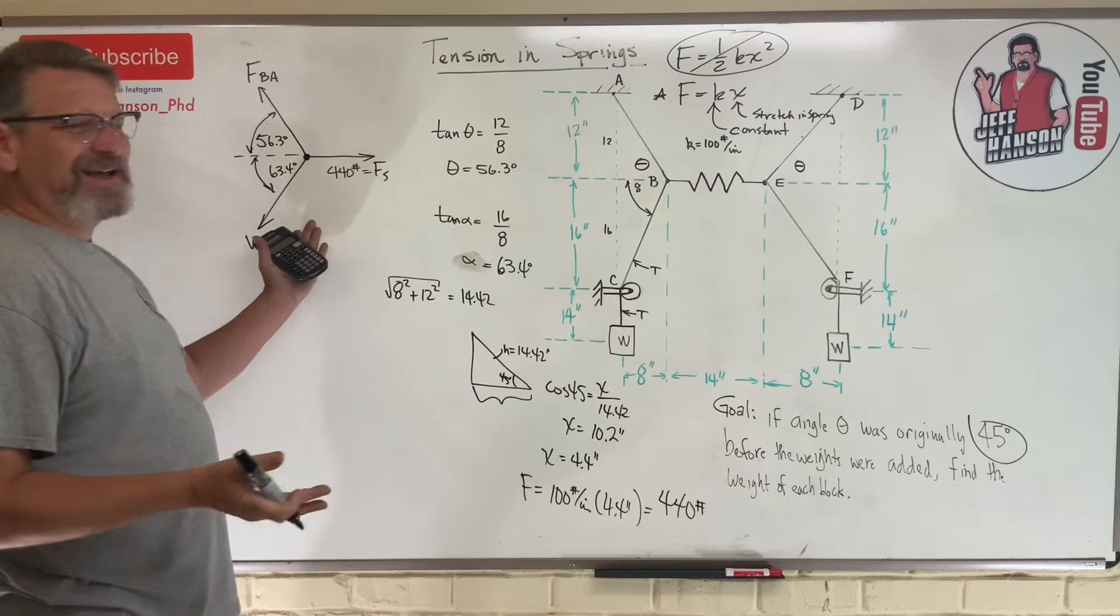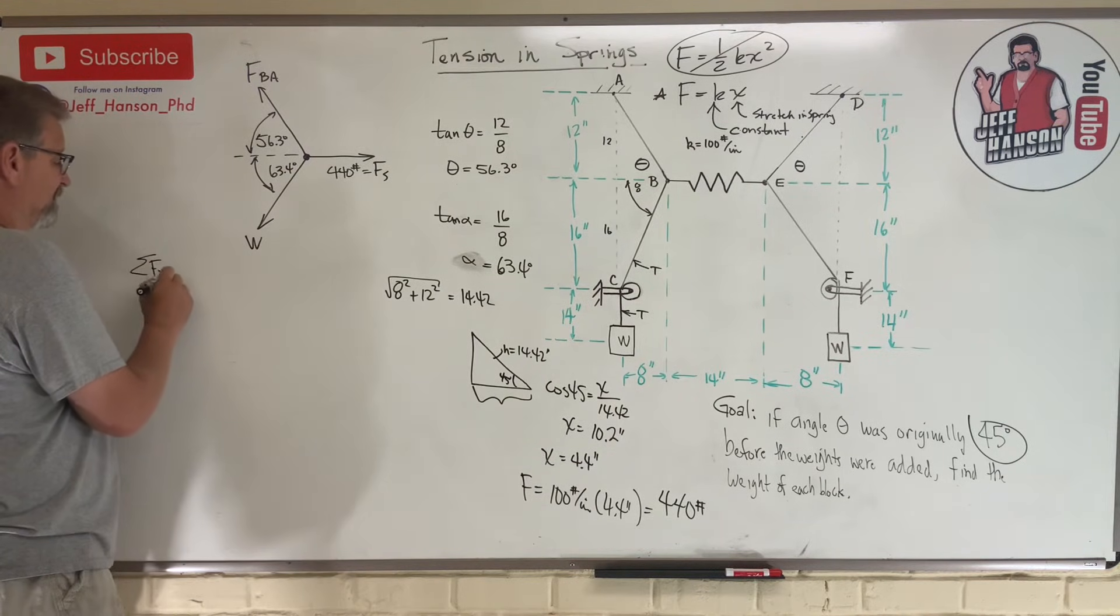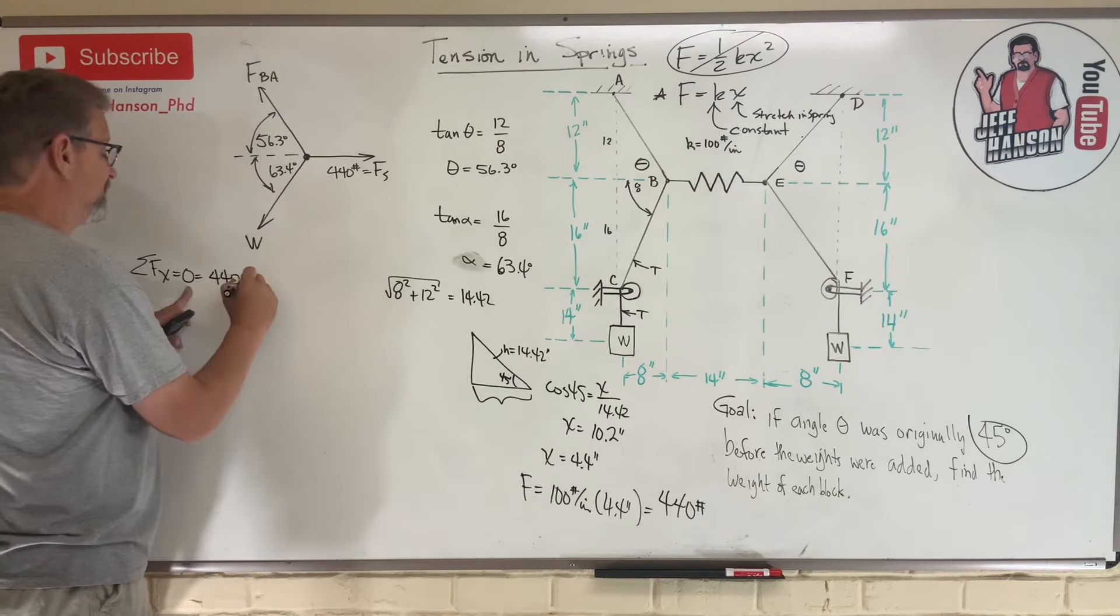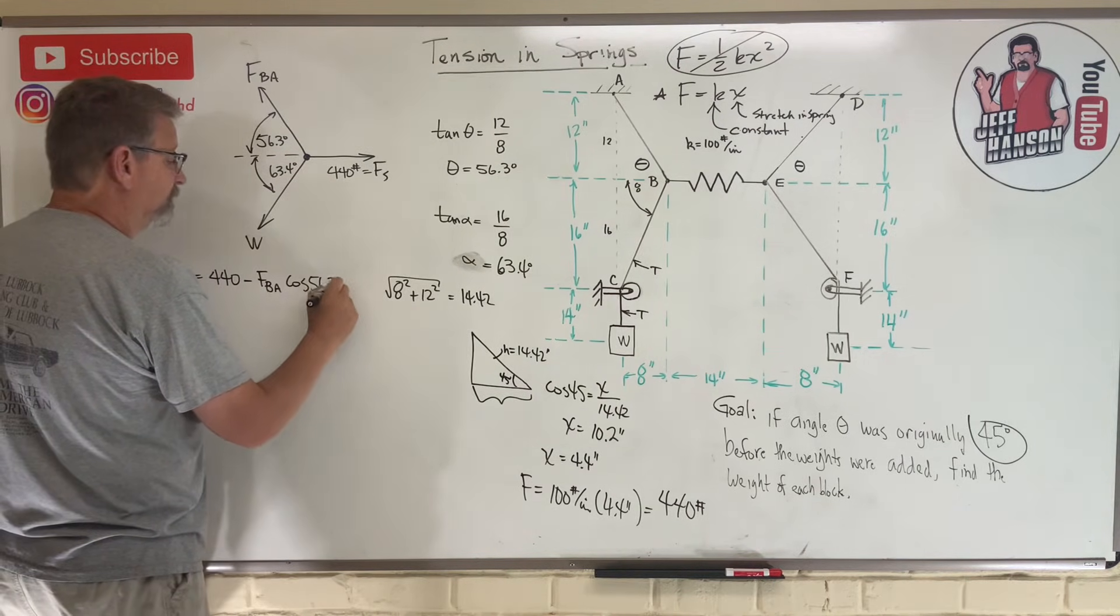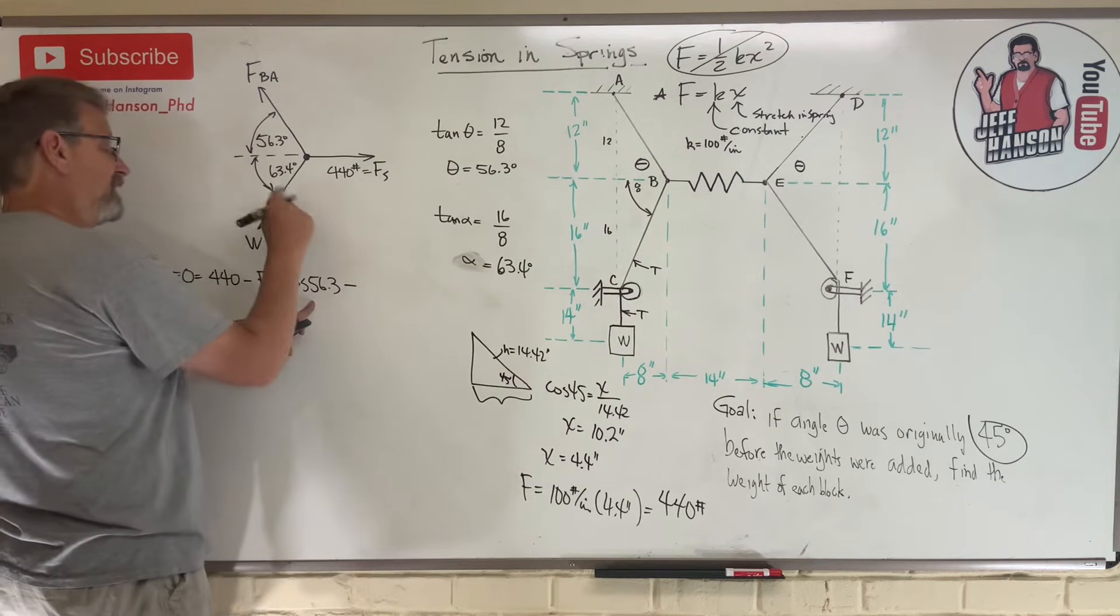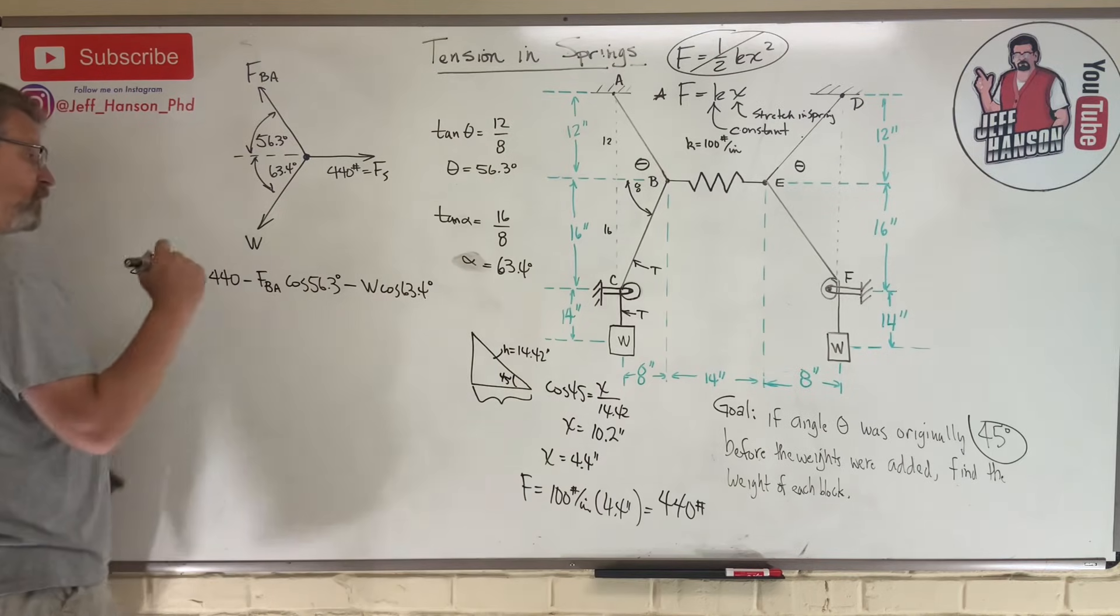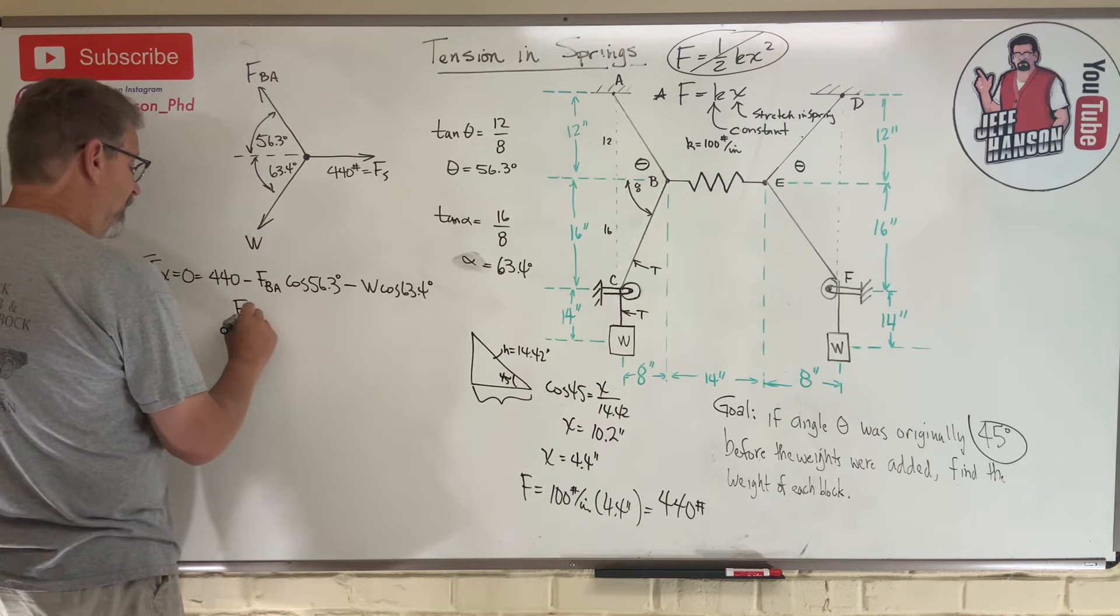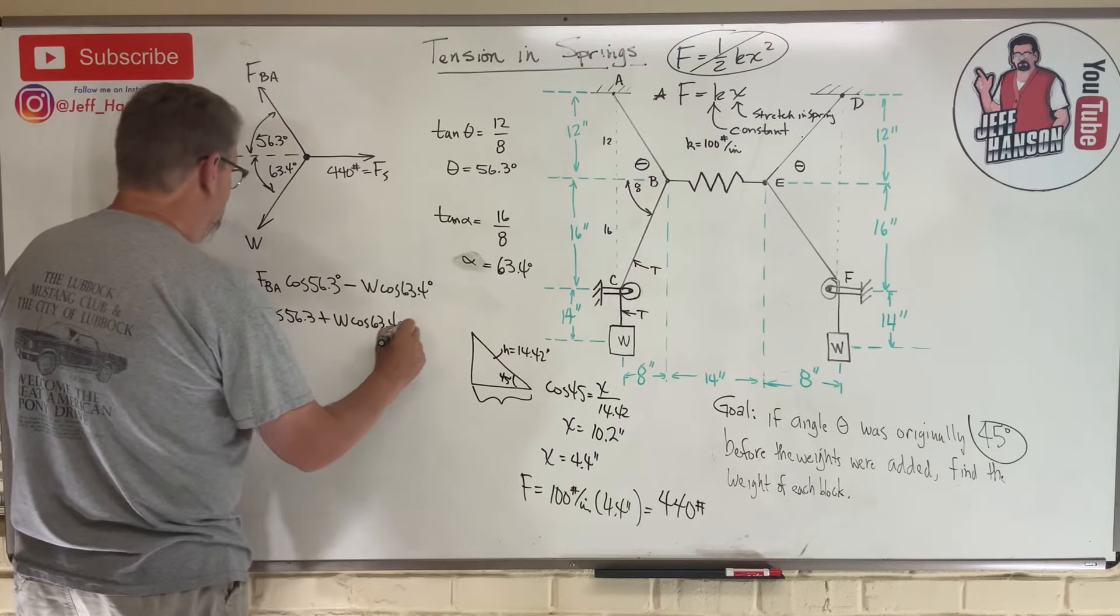Now that I know this, I got the world's simplest statics problem here from last chapter. Sum of the forces in the x equals zero. What do I have in the x direction? Well I've got 440, and then I've got minus Fba cosine 56.3, minus w cosine 63.4 degrees. Let me rewrite that equation. I'm going to take these two negatives and move them to the other side. I'm going to get Fba cos 56.3 plus w cos 63.4 equals 440.